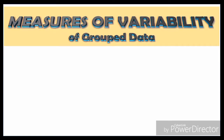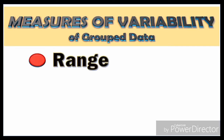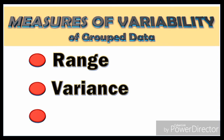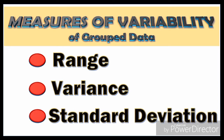Now we have this lesson about the measures of variability of grouped data. We have the following objectives. The first one is to find the range. The second one is to find the variance. And the third one is to find the standard deviation.